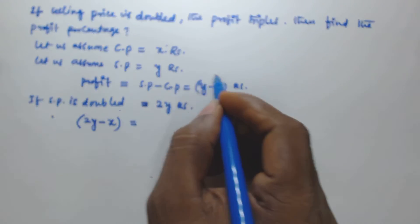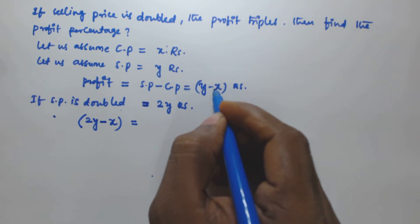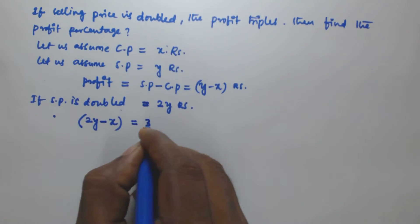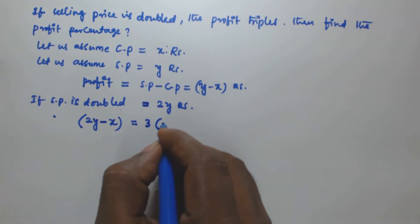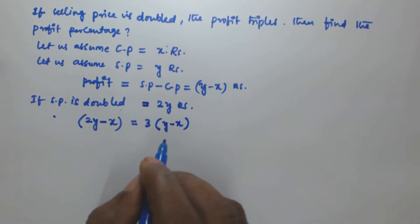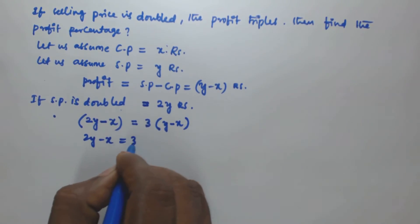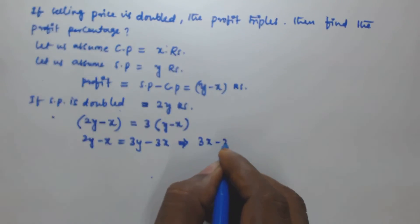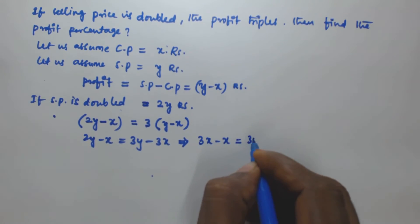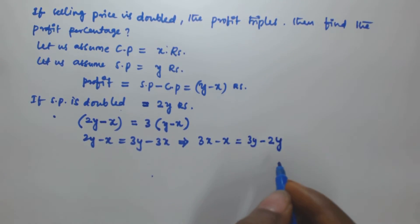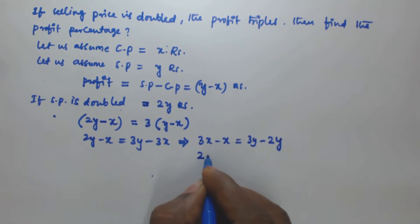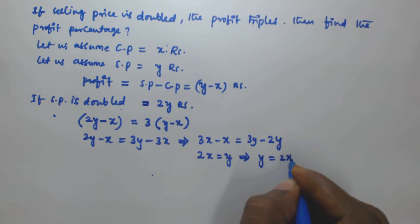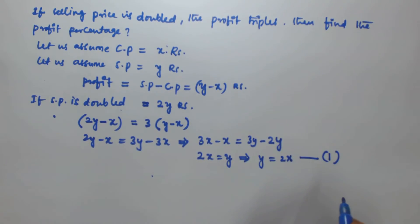The profit triples means the new profit equals three times the earlier profit. So we get: 2y minus x = 3(y minus x), which gives 2y minus x = 3y minus 3x. Rearranging: 3x minus x = 3y minus 2y, so 2x = y, meaning y = 2x.